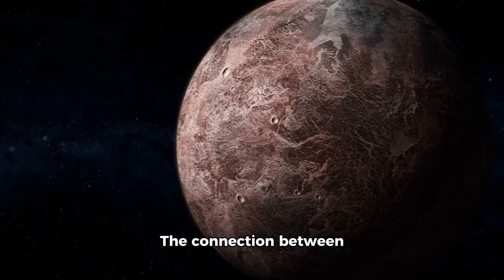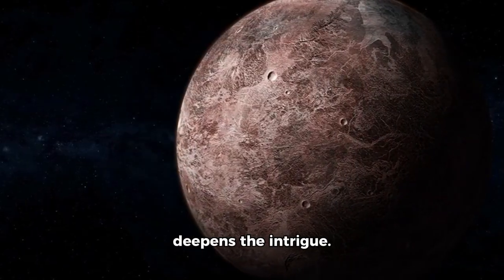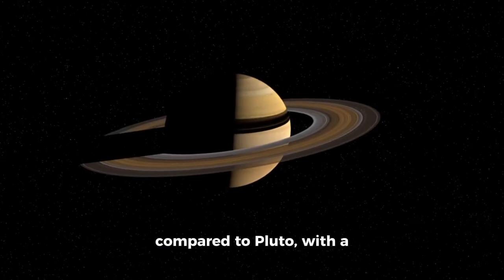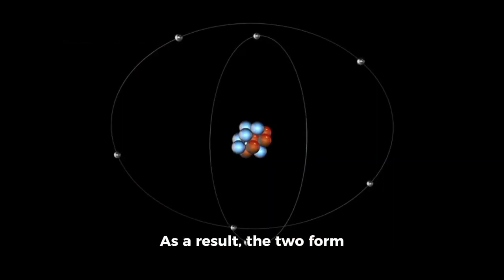The connection between Pluto and its largest moon, Charon, only deepens the intrigue. Charon's size is unusual compared to Pluto, with a diameter more than half that of its parent body. As a result, the two form what is often described as an orbiting binary system.